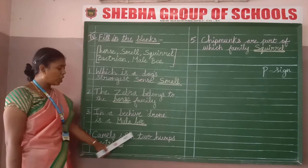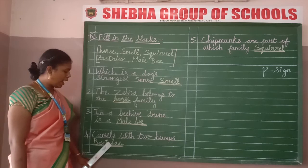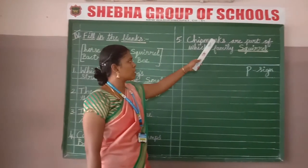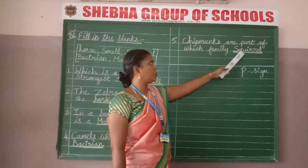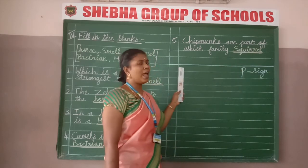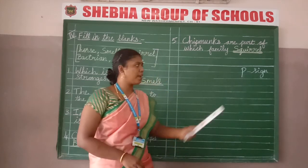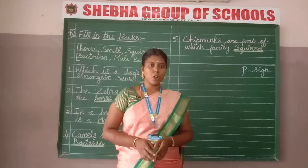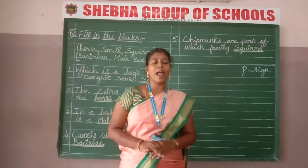Number 4: camels with two humps — the answer is Bactrian. Spelling: B-A-C-T-R-I-A-N. Number 5: chipmunks are part of the squirrel family. The correct answer is squirrel.